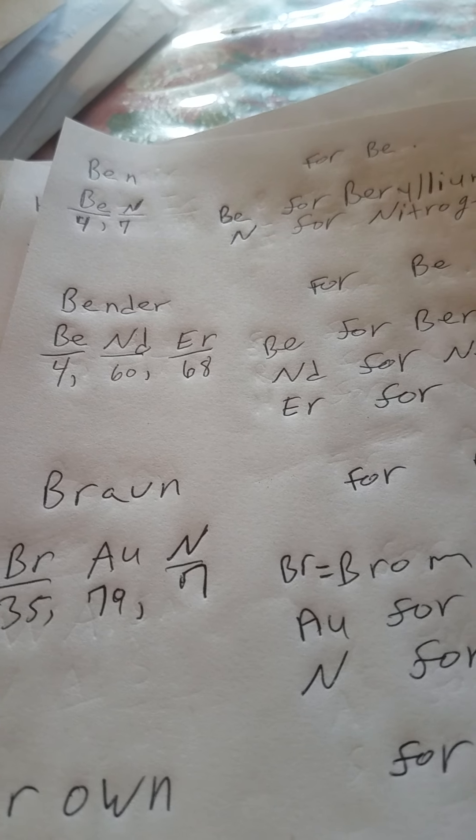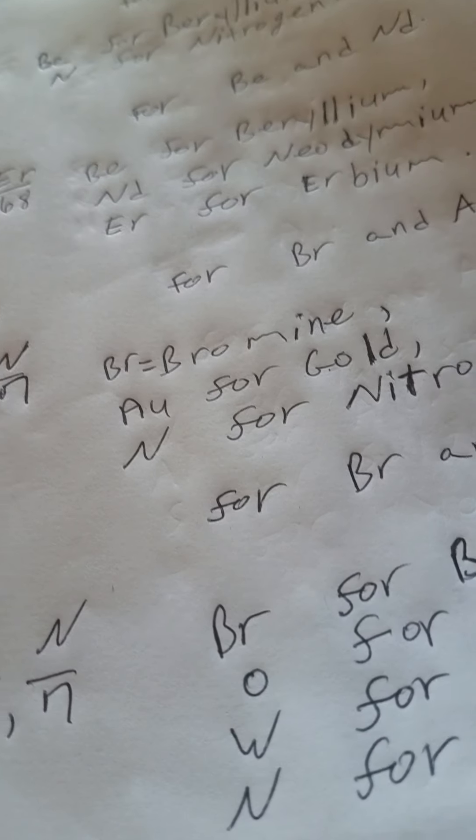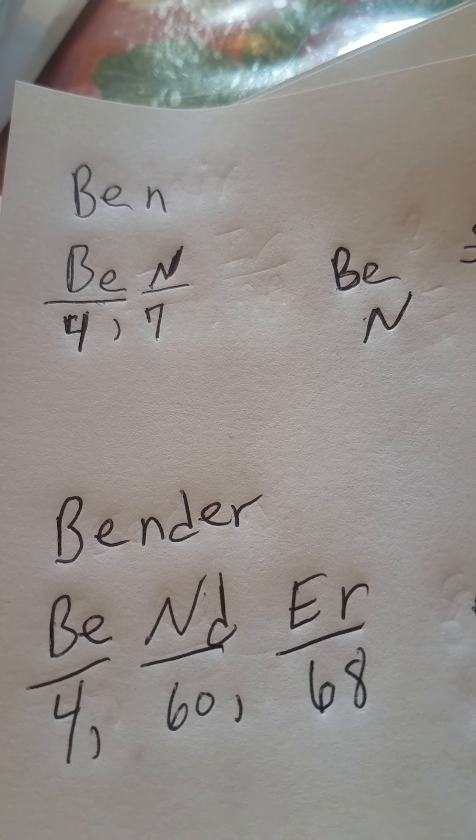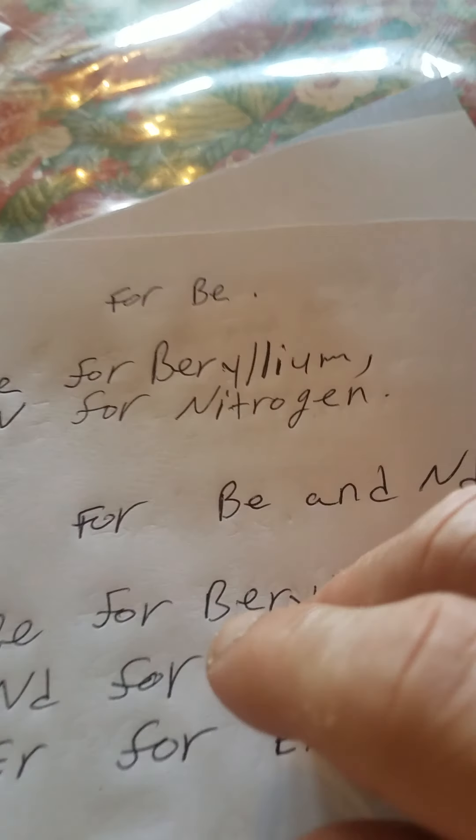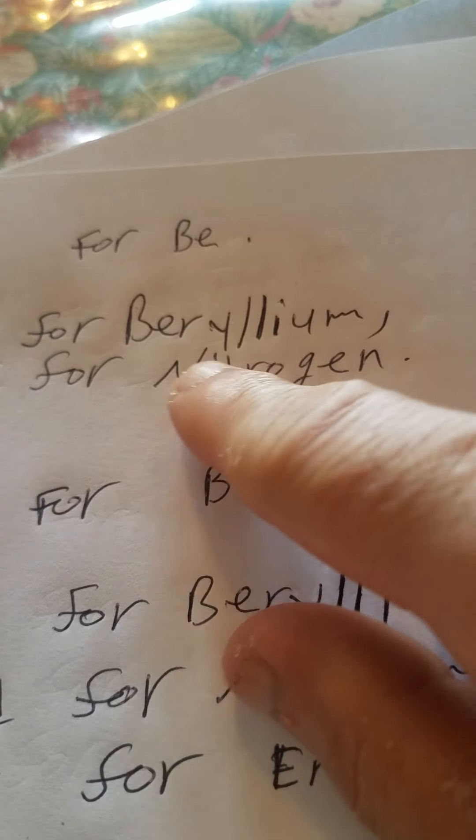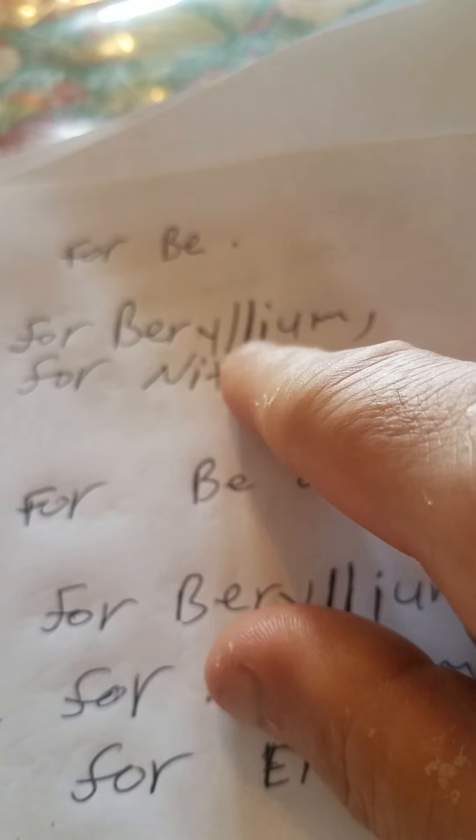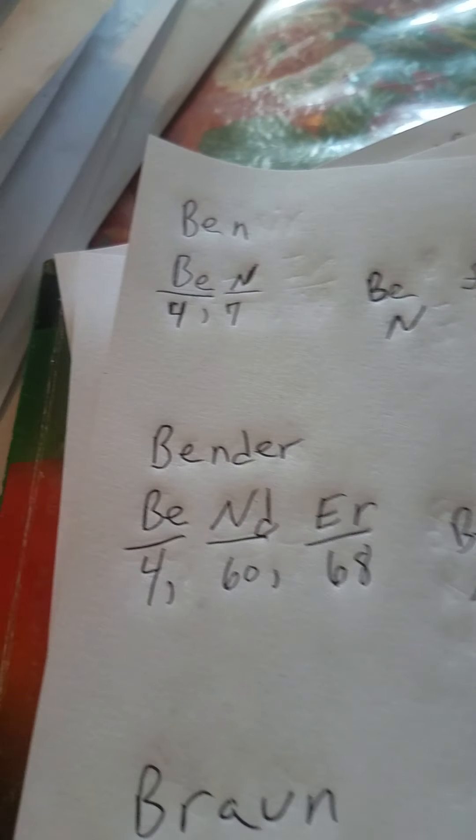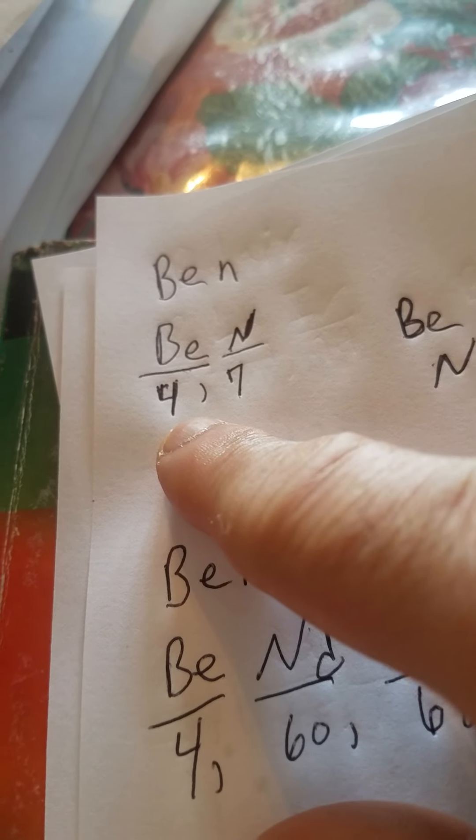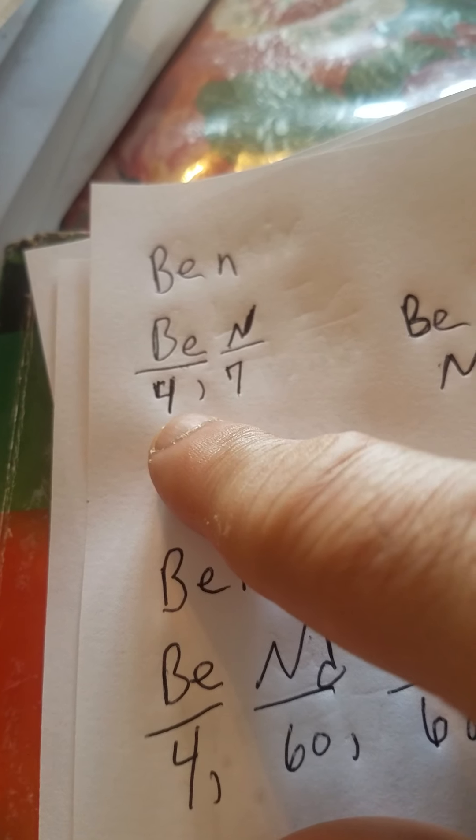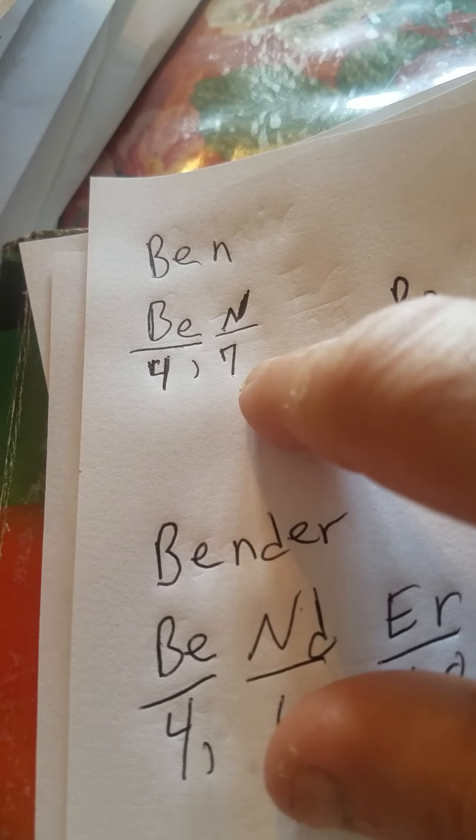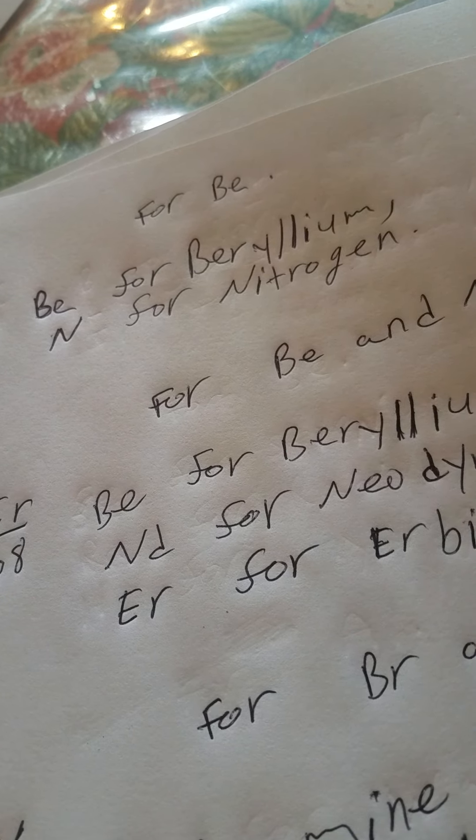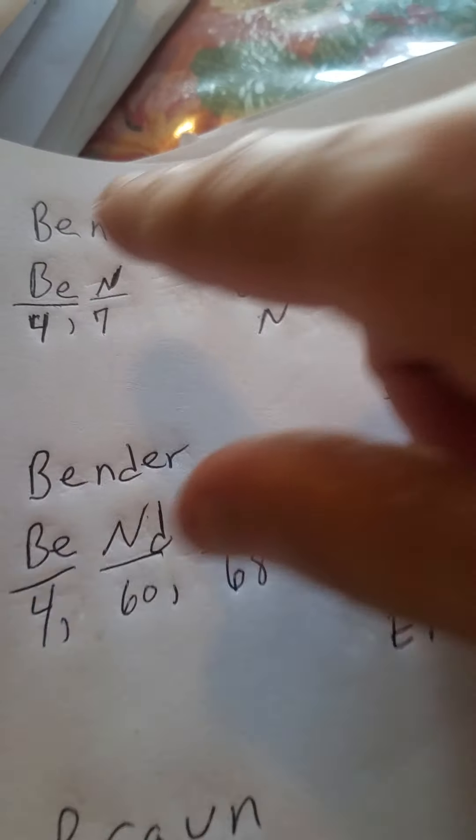It would be better to use names. Let's get started. For example, Ben, capital B-E-N, is your name Ben or Benjamin. Do you know beryllium? Capital B-E in the periodic table of elements, that's number four. And then you get N for nitrogen, which is atomic number seven. So the name Ben: beryllium and nitrogen.